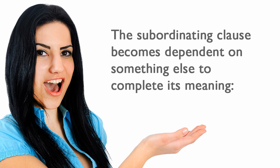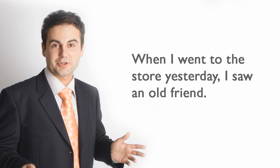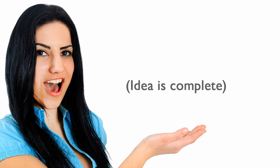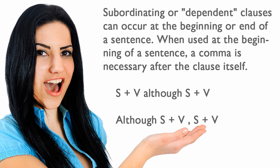The subordinating clause becomes dependent on something else to complete its meaning. 'When I went to the store yesterday, I saw an old friend.' The idea is complete. Subordinating, or dependent clauses, can occur at the beginning or end of a sentence. When used at the beginning of a sentence, a comma is necessary after the clause itself.